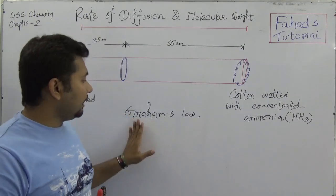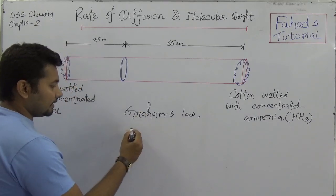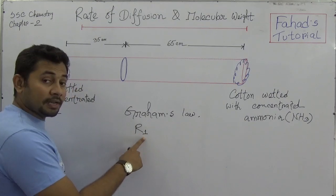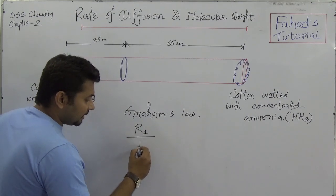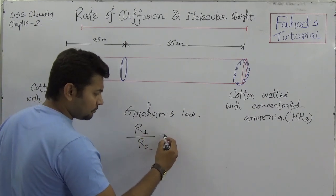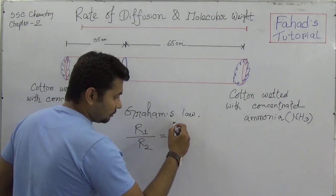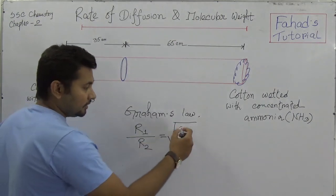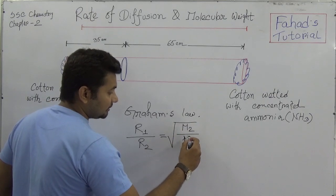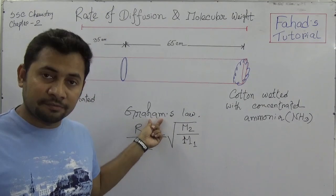Graham's Law states that the rate of gas 1 divided by the rate of gas 2 is proportional to the square root of the molecular weight of the second gas divided by the first. I shall explain Graham's Law in more detail in another video.